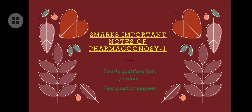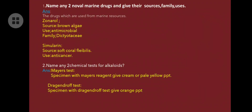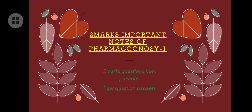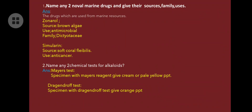First question: write any two novel marine drugs, giving sources, family, and uses. Drugs used from marine resources are called marine drugs. Zonarole — source is brown algae, uses: acts as an anti-microbial, family: Dictyotaceae. Simularine — source is soft coral Flabellum, uses: acts as an anti-cancer agent.